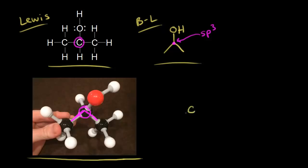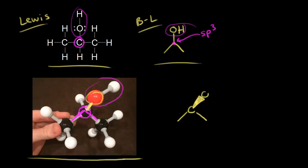So this is the carbon in magenta, and we have these two bonds in the plane of the paper. Next, let's look at what else is connected to the carbon in magenta — there is an OH. The OH in our picture is coming out at us in space, which is why this oxygen atom looks so big. We represent that with a wedge, which means the bond is in front of your paper, so the OH is coming out at you in space.